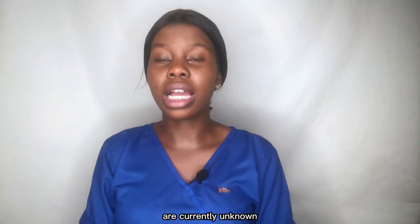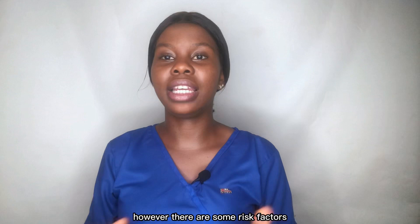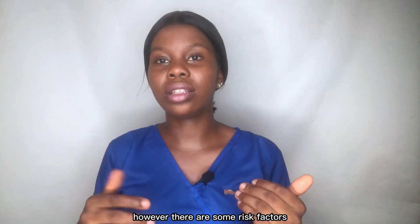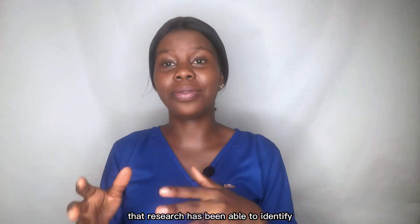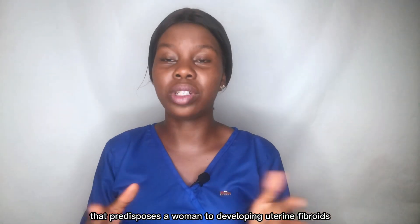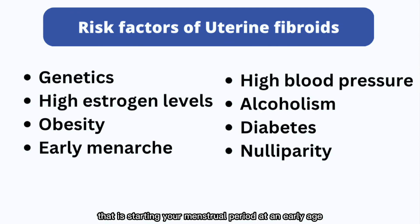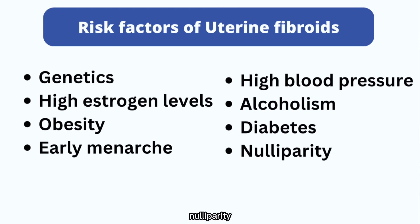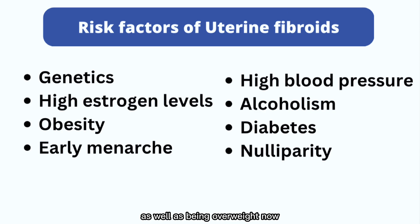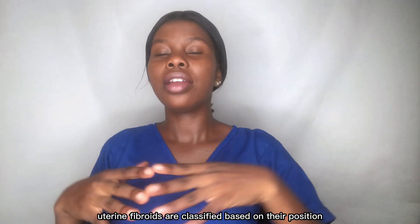The general causes of uterine fibroids are currently unknown. However, research has identified risk factors that predispose a woman to developing them, including genetics, estrogen levels, obesity, early menarche (starting your menstrual period at an early age), high blood pressure, alcoholism, diabetes, and nulliparity — meaning a woman who has never given birth — as well as being overweight.